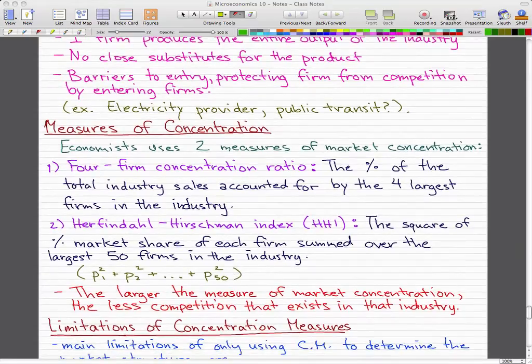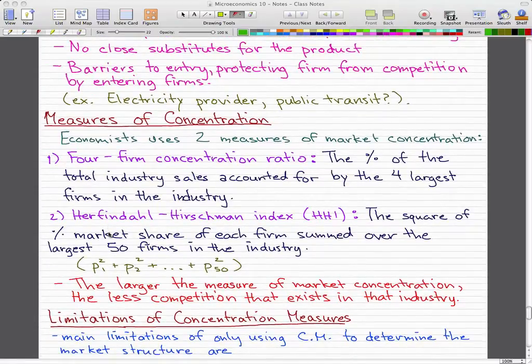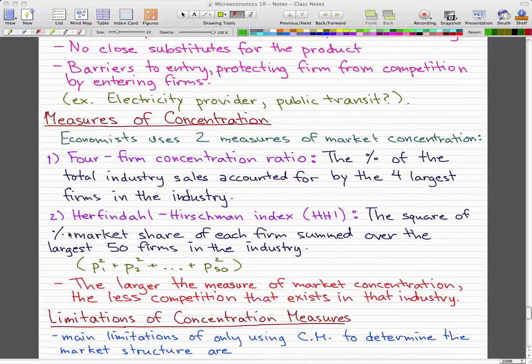Now, measures of concentration. Economists use two measures of market concentration: the four-firm concentration ratio, which is the percentage of the total industry sales accounted for by the four largest firms in the industry, and the Herfindahl-Hirschman Index, the HHI. And this is the square of the percentage market share of each firm summed over the largest 50 firms in the industry.